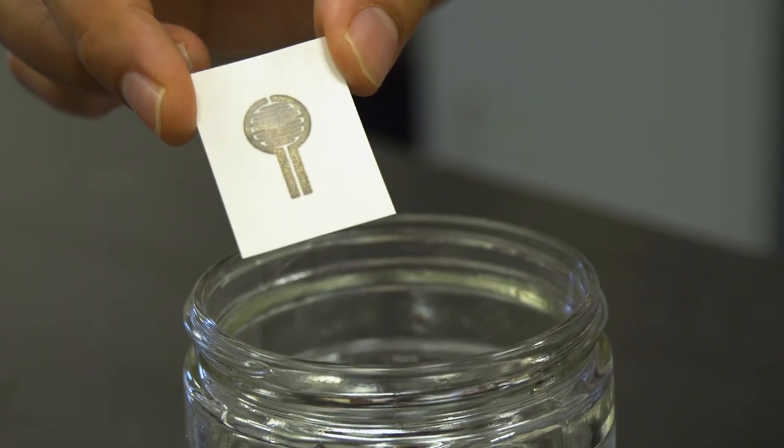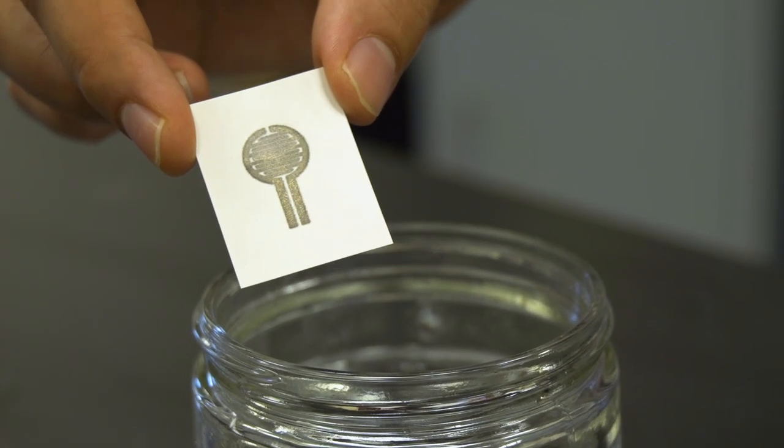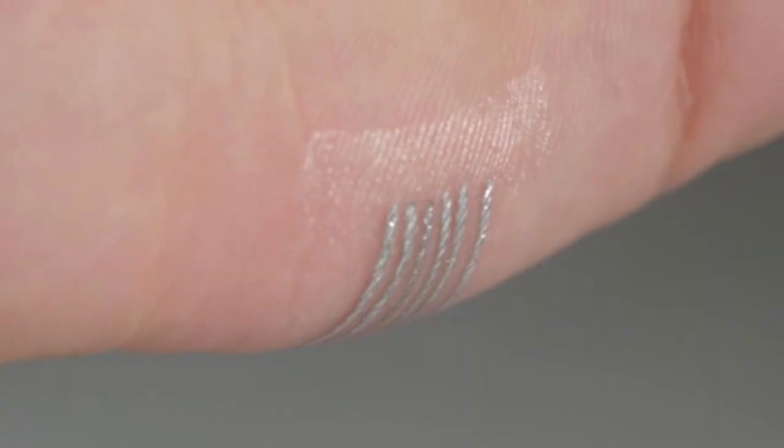We're reporting a new way of creating electronic tattoos. These are circuits that are printed on temporary tattoo film, just like you can buy commercially, that's used for children's tattoos.